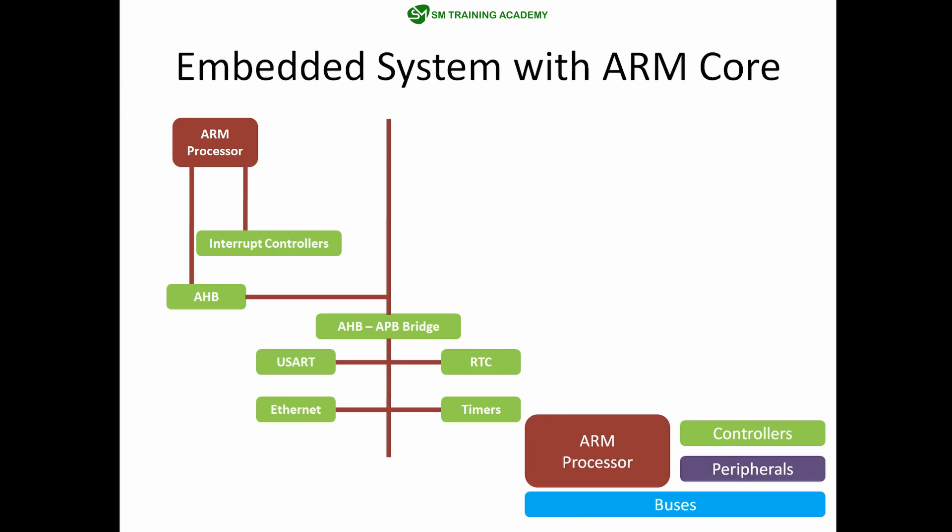If you want a peripheral operating at a higher frequency, you should choose one directly connected to the AHB bus rather than the APB bus. High-frequency peripherals like the memory controller and AHB external bridge are connected directly to the AHB bus. Using the AHB external bridge, external memory elements like ROM and flash memories can be directly accessed from the ARM processor.